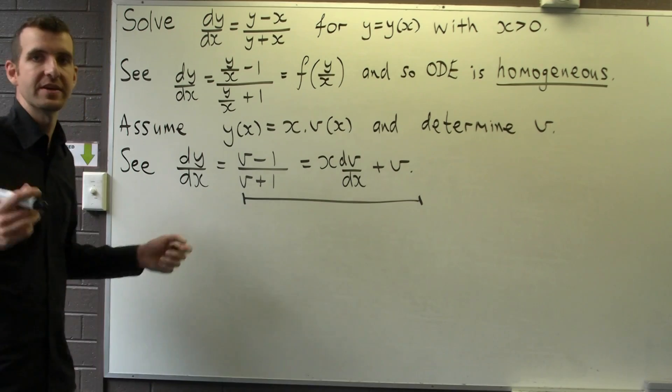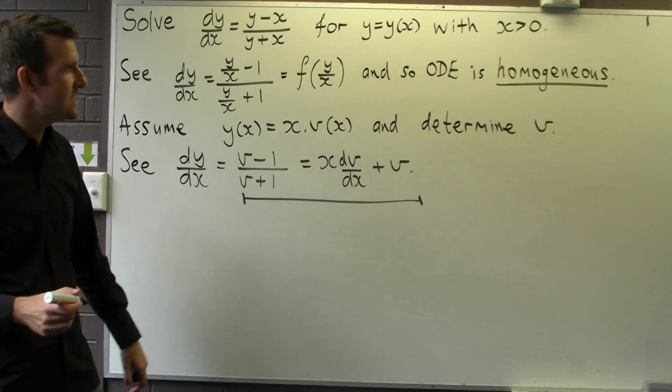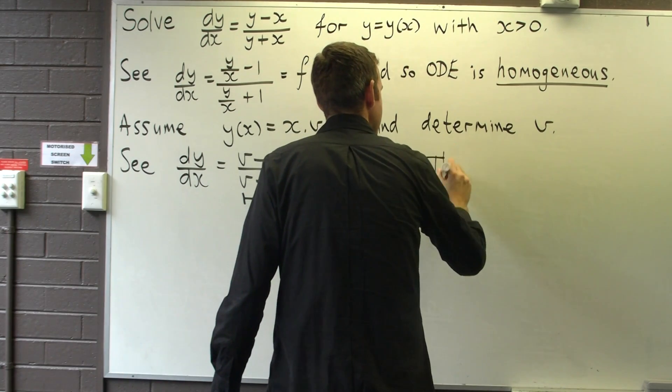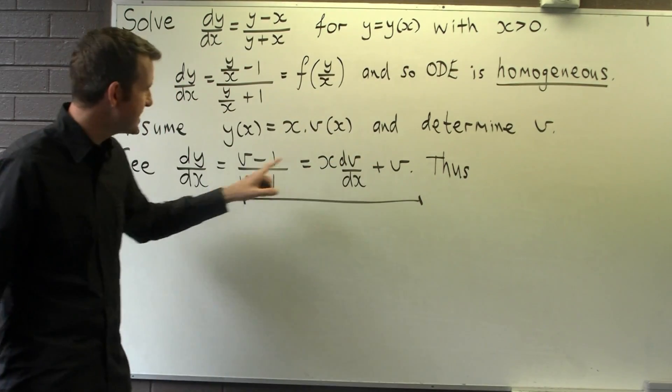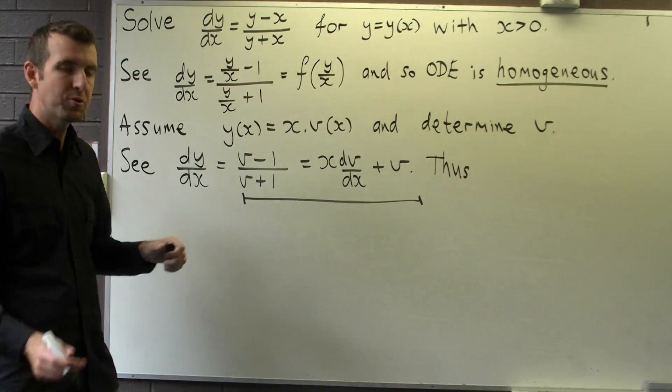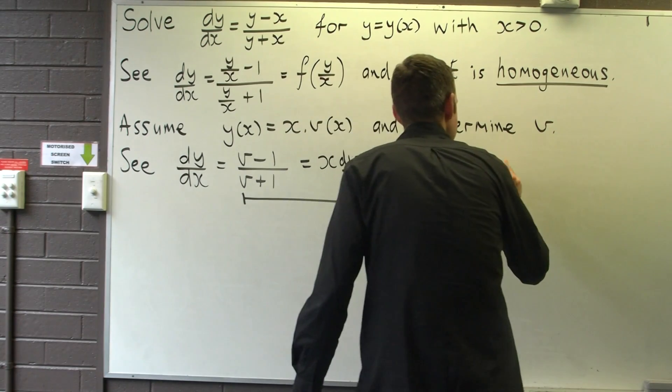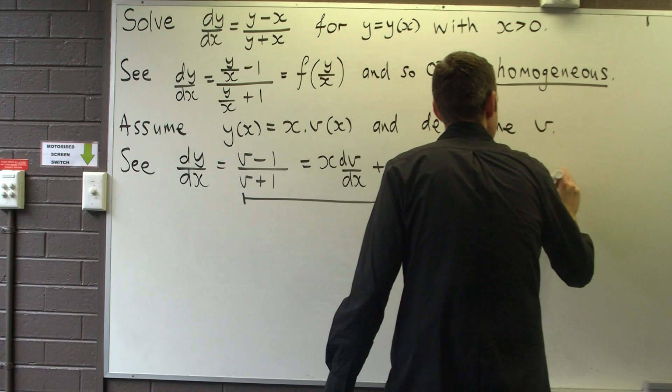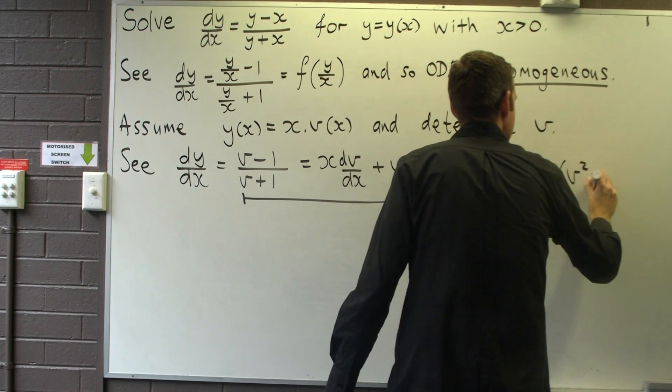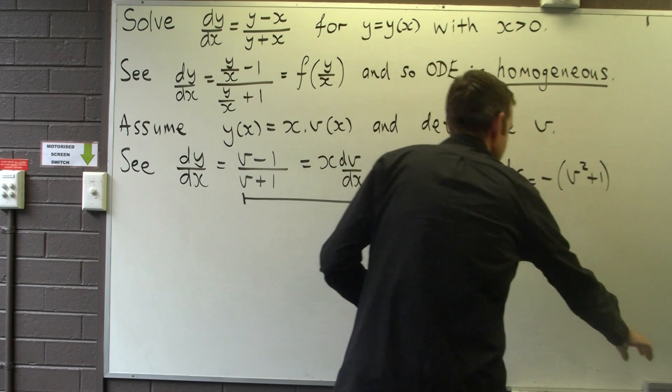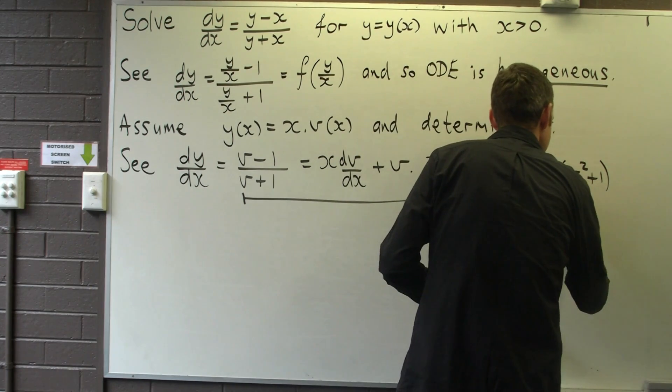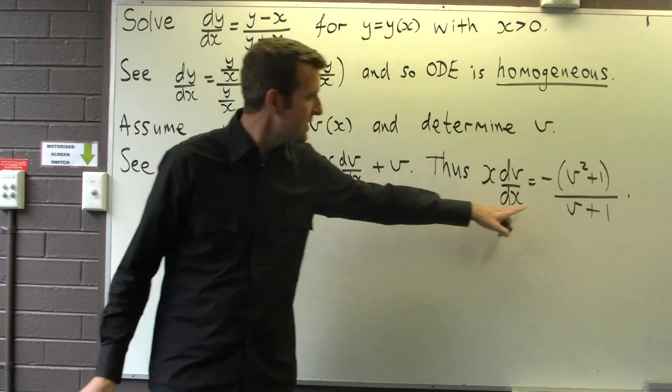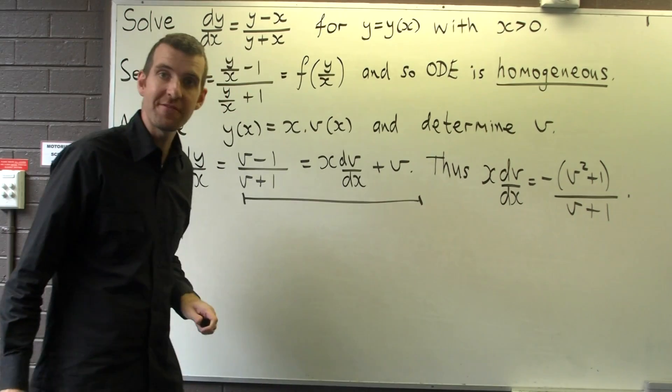So, now I have a new differential equation, which I'm going to rearrange, involving v. So I want to solve that. So let's rearrange this. So if I take this v to the other side, and put it all over one denominator, I get the following. So if you look closely now, this is just a separable differential equation.